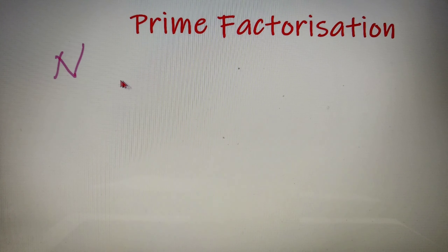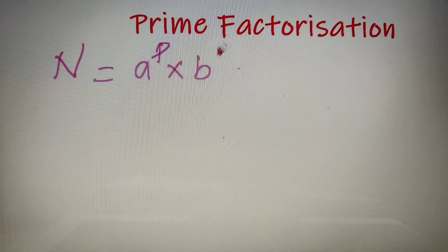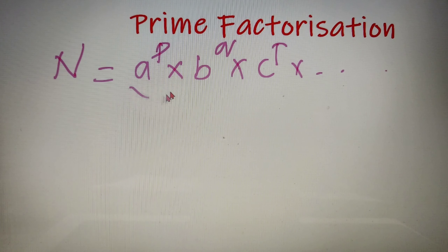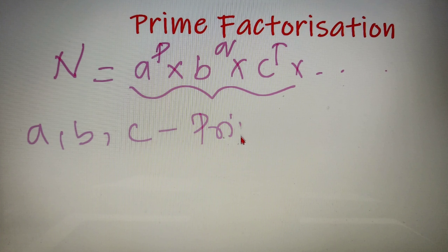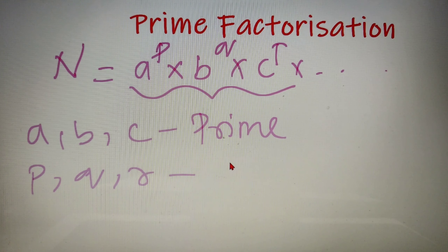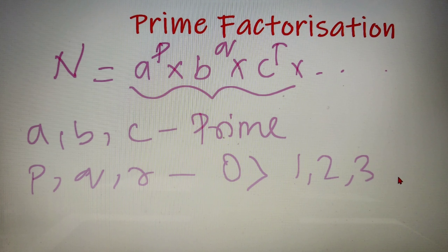In general, if we have a number n, then I can represent n as a to the power p, into b to the power q, into c to the power r, and so on — where a, b, and c are prime numbers and p, q, and r are any arbitrary positive powers greater than 0. For example, p, q, and r can be 1, 2, 3, or so on.